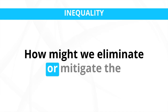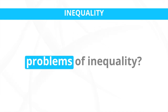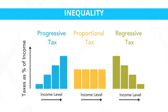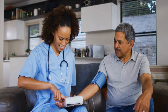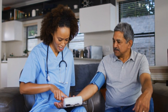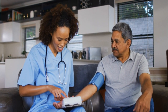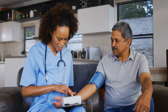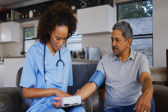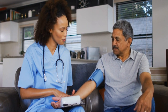How might we eliminate or mitigate the problems of inequality? Implementing progressive taxation can help redistribute wealth and resources more equitably, while increased social spending can provide targeted support to those in need. Investing in education and healthcare systems can help level the playing field and provide equal opportunities for individuals to improve their socioeconomic status.